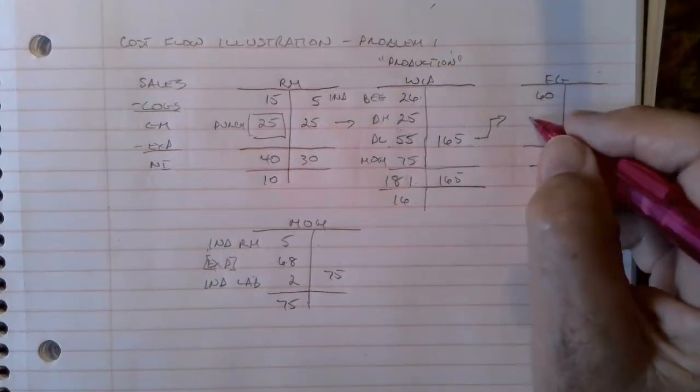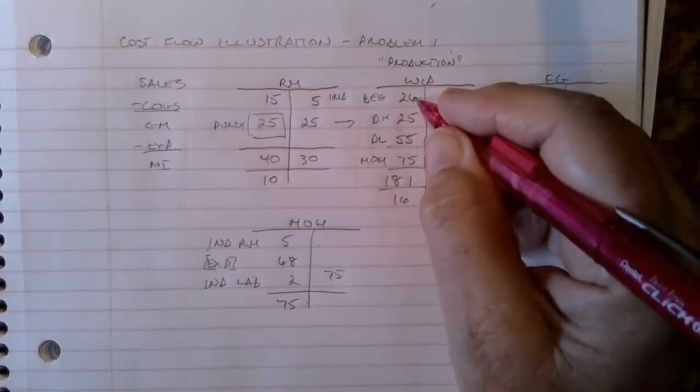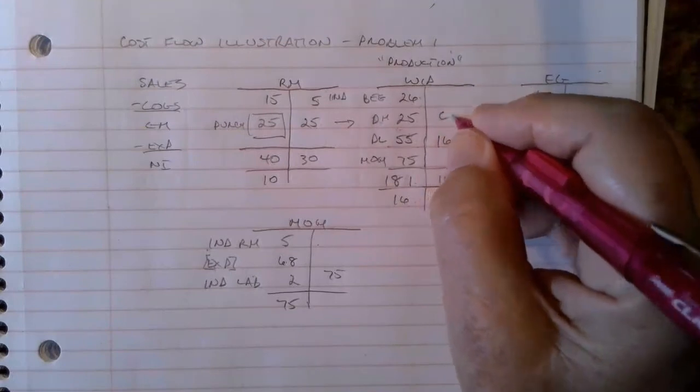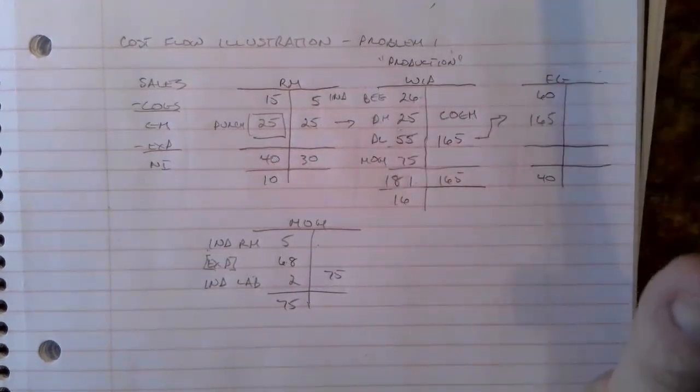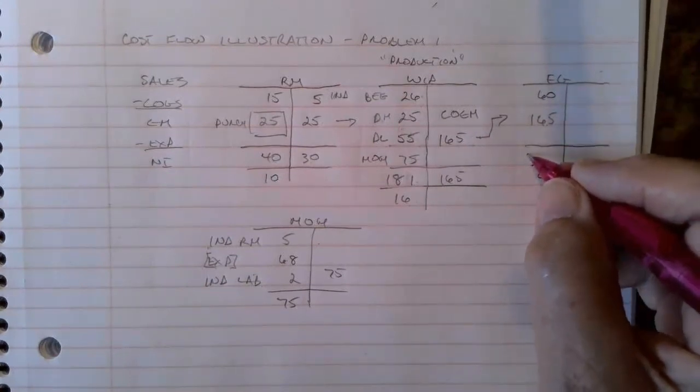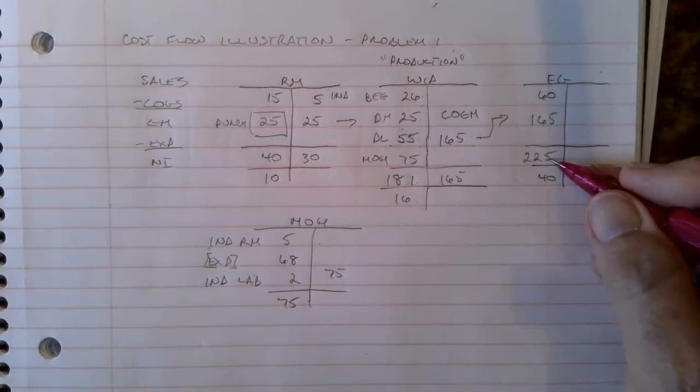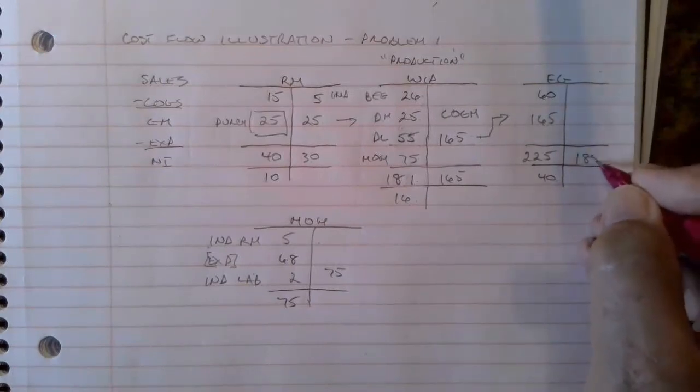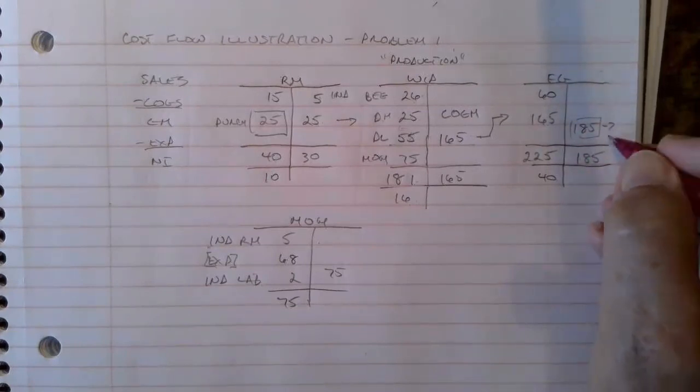So finished goods, we add one sixty-five issued to production. This is actually, those are our costs added. When I add beginning inventory and subtract ending inventory, this gives me cost of goods manufactured. So this is the handiest schedule in the world. All of your answers come out of these T accounts. So one sixty-five goes into finished goods, this becomes two twenty-five, which means my ending balance is forty, then I must have subtracted one eighty-five. One eighty-five is what came out of finished goods, and that goes to cost of goods sold.